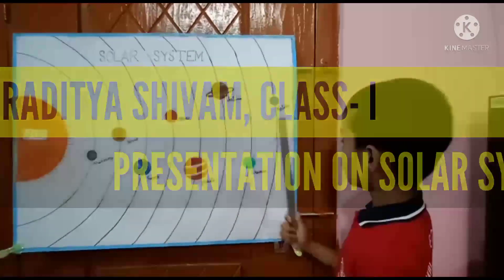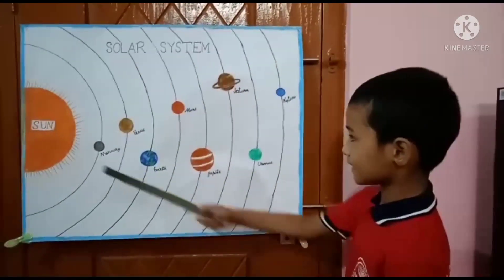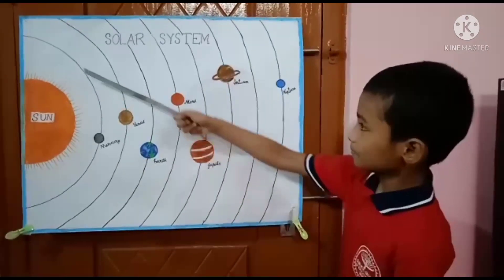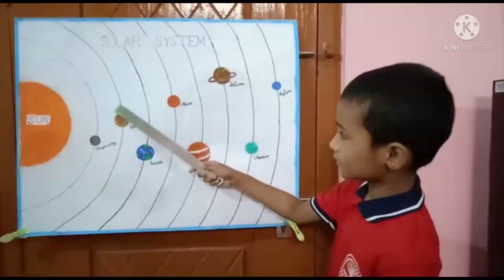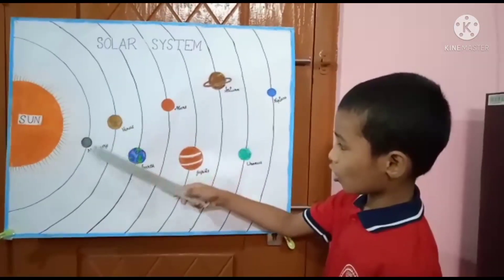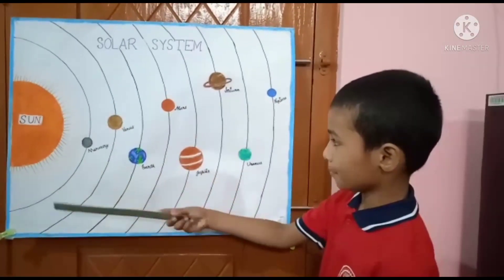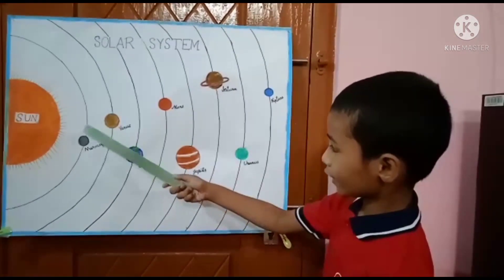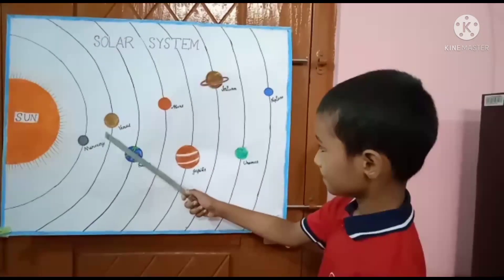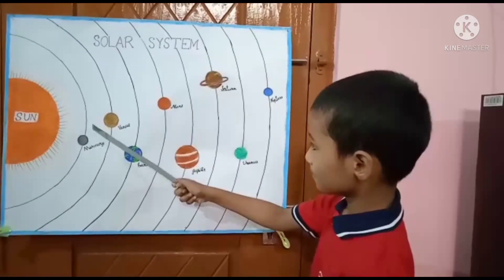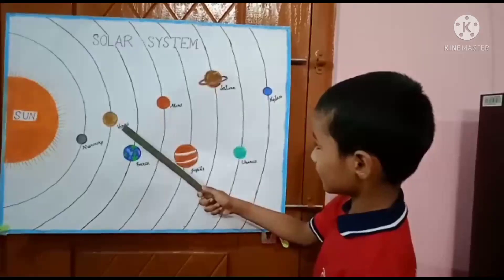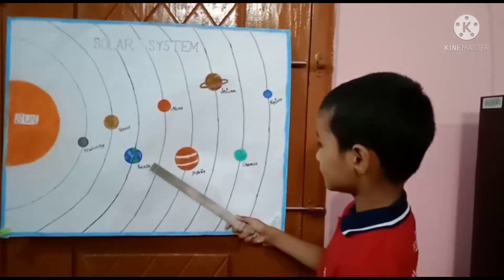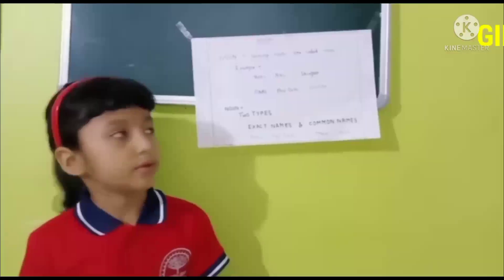All planets move around the sun. Black lines are called orbit. Smallest planet — this is a planet. Brightest planet — this is Earth.